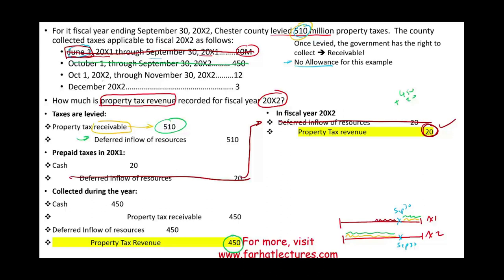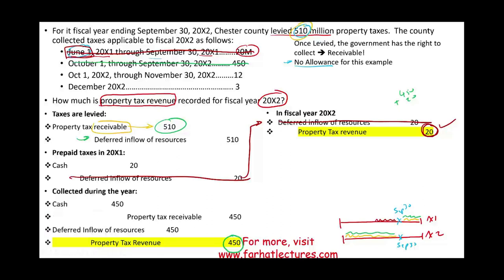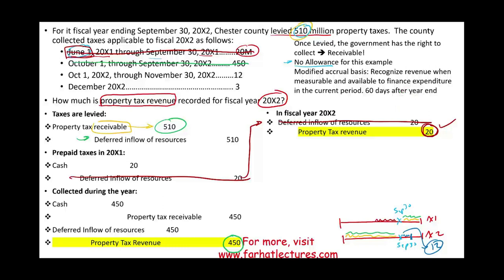October 1st X2 through November 30th X2, we collected $12 million. Here's where modified accrual basis comes into play. We recognize revenue when it's measurable and available to finance expenditure in the current period.